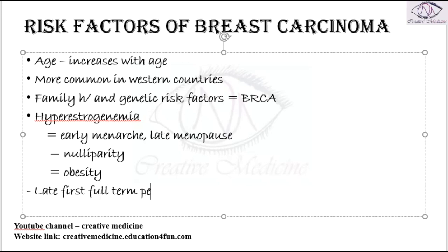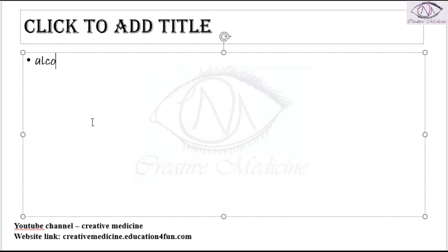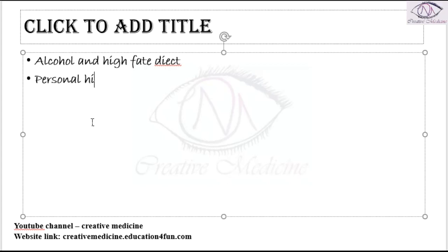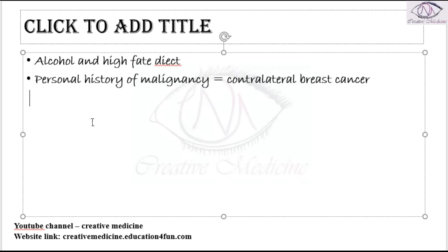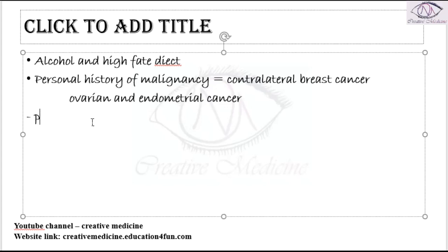Late first full term pregnancy is also a risk factor of breast carcinoma. Other risk factors include consumption of alcohol and high fat diet. If the patient has a personal history of malignancy, especially contralateral breast cancer, or ovarian malignancy or endometrial cancer, these are also risk factors.